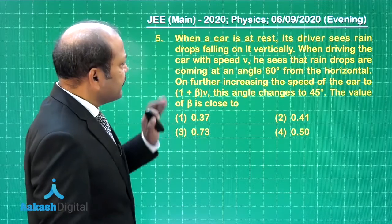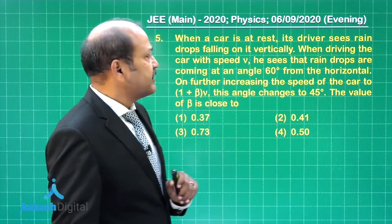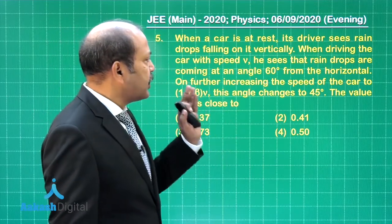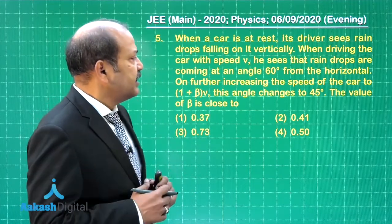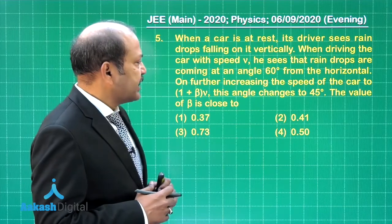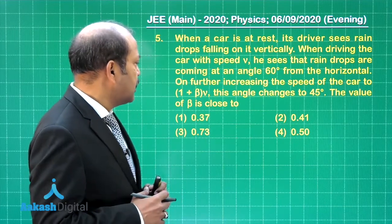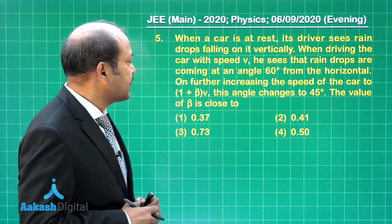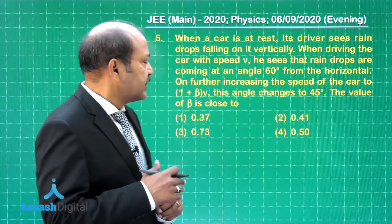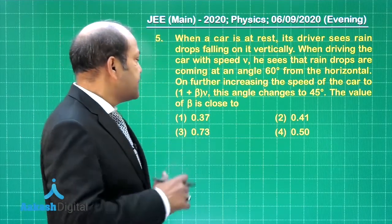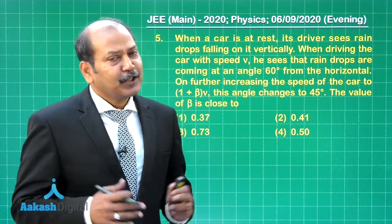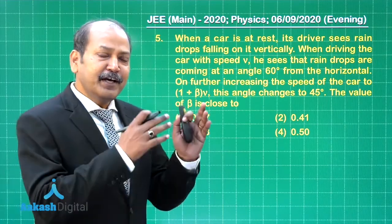Question 5 says when a car is at rest, its driver sees raindrops falling on it vertically. When driving the car with speed v, he sees that raindrops are coming at an angle 60 degrees from the horizontal. On further increasing the speed of the car to 1 plus beta times v, this angle changes to 45 degrees. The value of beta is close to. Now the question is clearly from the topic relative velocity.